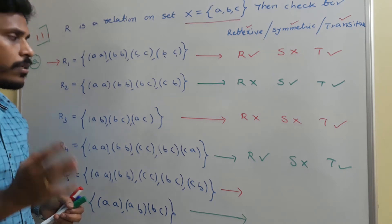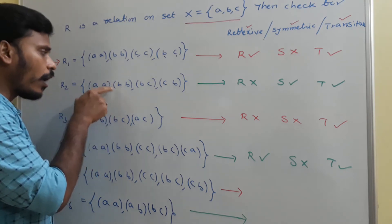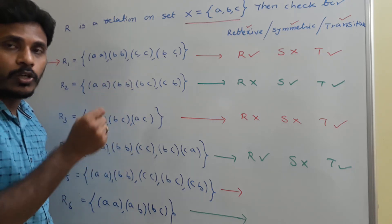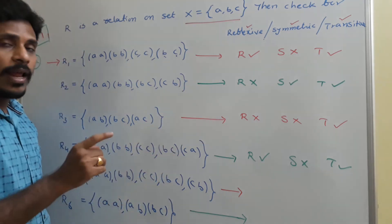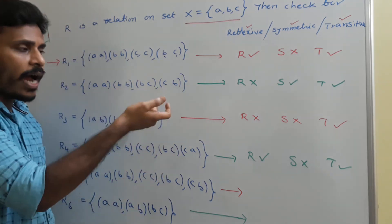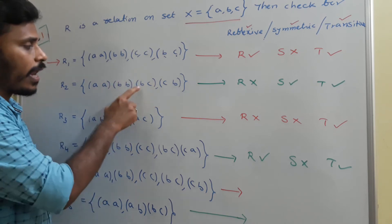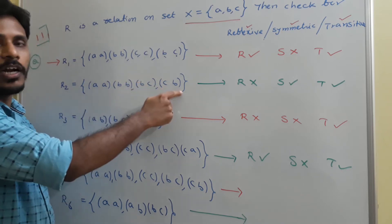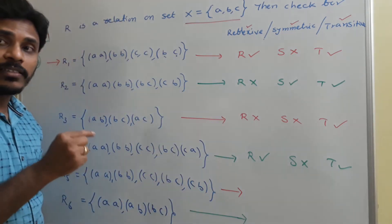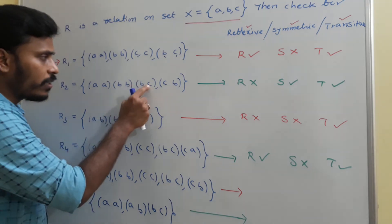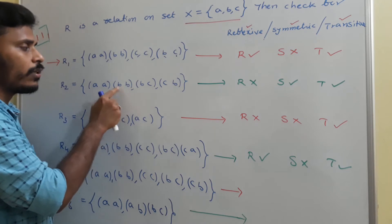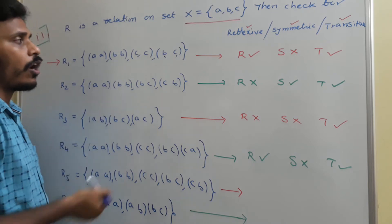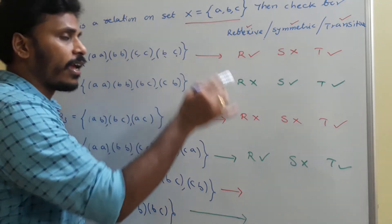Coming to r2: (a,a) and (b,b) are in r2, but (c,c) is not there, so it is not reflexive. For symmetric: (b,c) is there and its interchange (c,b) is also there — this holds for every ordered pair, so it is symmetric. For transitive: (b,c) and (c,b) share c as common; this gives (b,b), which is in the relation. Checking further confirms it is transitive as well.